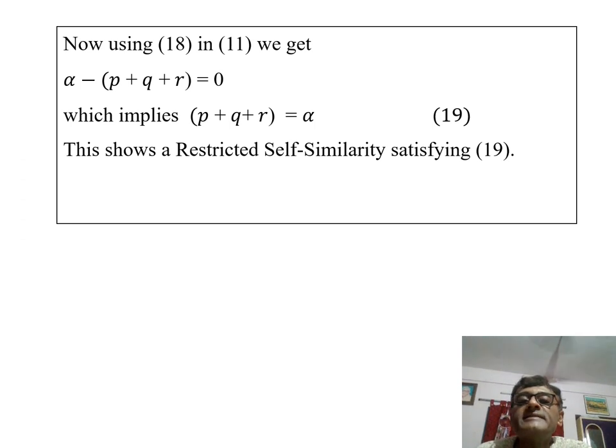We can have finally these alpha is equal to p plus q plus r. So this is one condition we are getting for the present case. This is the restriction. We should see that self-similarity is there, of course, but with the presence of this particular condition.